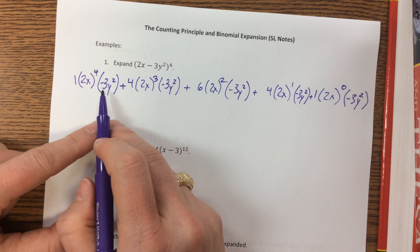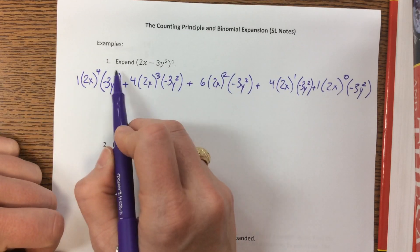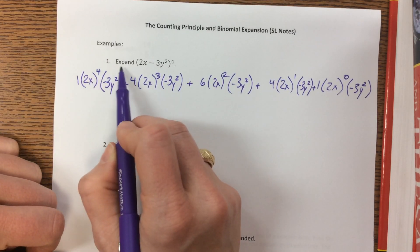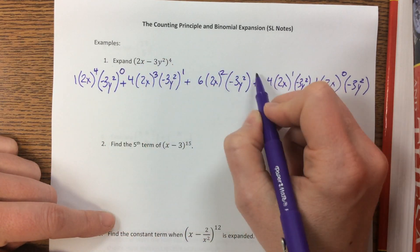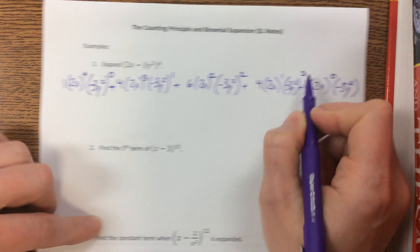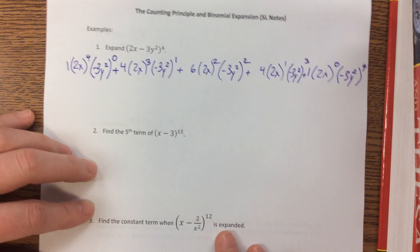Okay, now I need to raise these to their powers. Keeping in mind, the exponents always add up to this exponent here. So this is 0, then this is 1, this is 2, this is 3, this last one is 4.